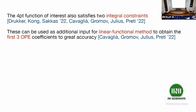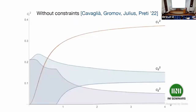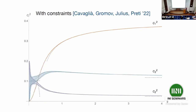It turns out you can do even more. The four-point function satisfies two additional integral constraints recoverable from integrated correlators. Using these on top of the dimensions of the first 10 long operators and the crossing equations, the King's group in their second paper further constrained the first three OPE coefficients. The bands for C2 and C3 squared basically collapse to very thin lines as well, achieving a very accurate determination of these OPE coefficients using the linear functional method.